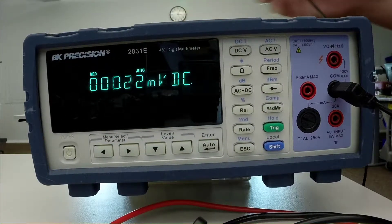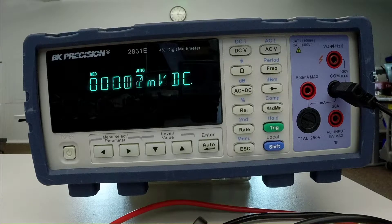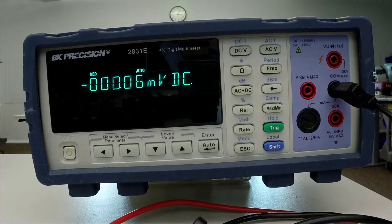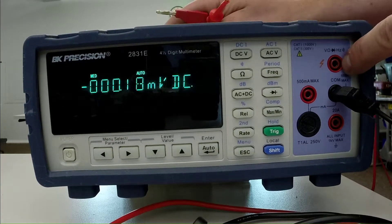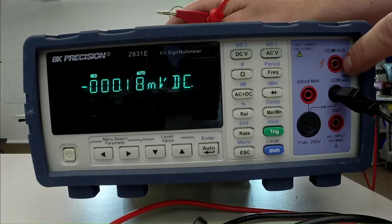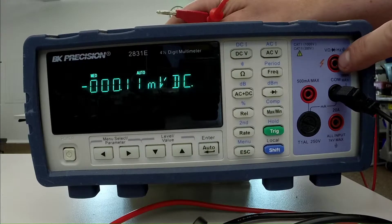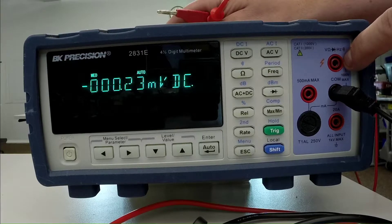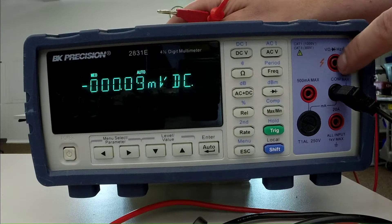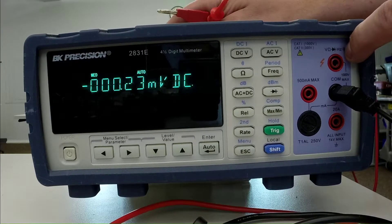Okay, and we need to put the positive test lead in, depending on what type of measurement we're trying to do. So the most common terminal we'll use up here is this guy at the top, which you'll notice is labeled that this is used for voltage measurements, resistance, diodes, frequencies, and continuity are what these symbols up here at the top mean.